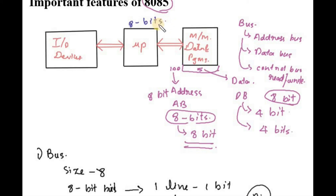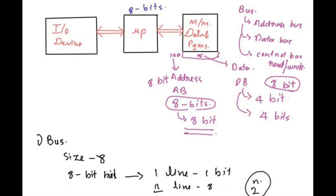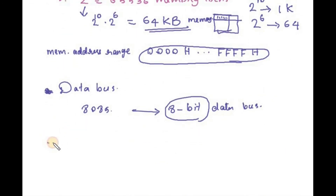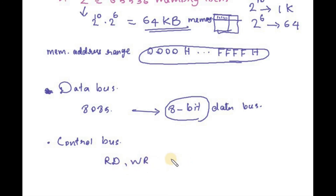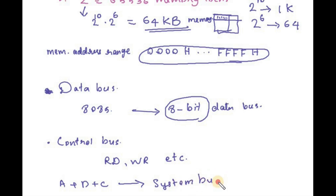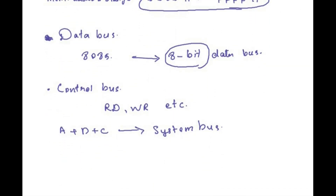The third type is the control bus. The control bus carries control signals that indicate the type of operation — either a read operation or a write operation. These three buses — the address bus, data bus, and control bus — together are known as the system bus. This is the bus architecture of the 8085.